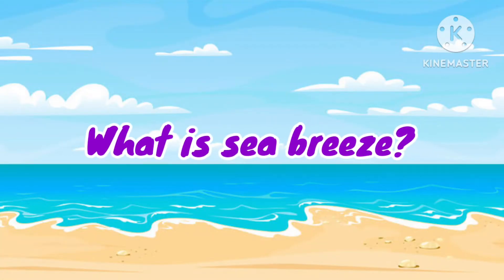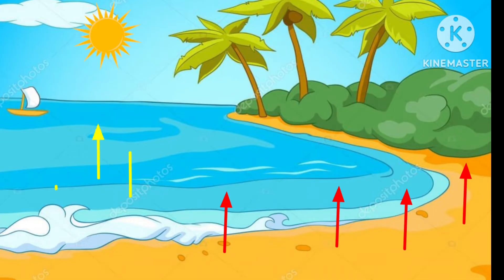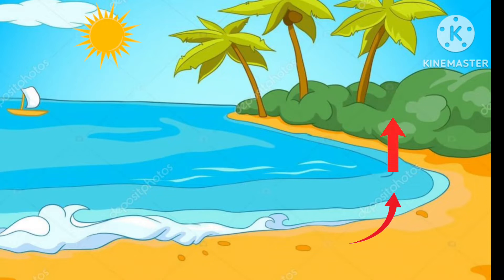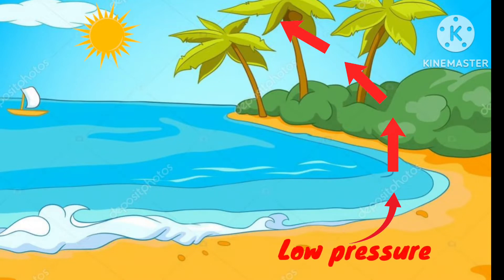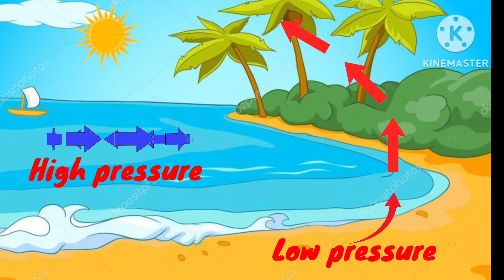Now let's see what is sea breeze. During the daytime when the sun is up, the land air heats up faster whereas the sea air heats slowly. Hence the air above the land gets warmed up and rises, making a region of low pressure above land. Comparatively, the air above the sea is cooler and has a higher pressure.